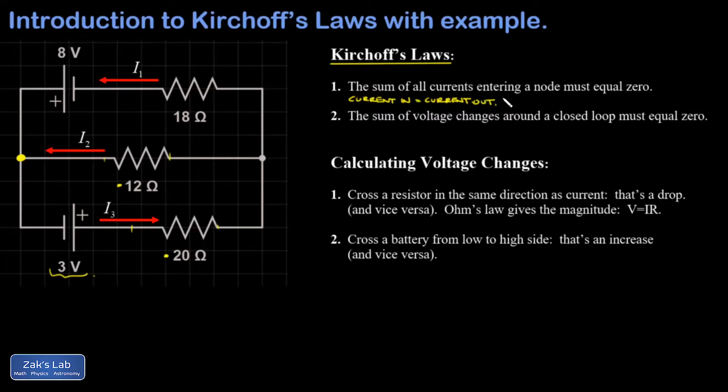Kirchhoff's Law number two, the sum of all the voltage changes around a closed loop must equal zero. All we're saying here is like if you drove your car in a giant loop and came back to where you started, then the sum of all the elevation changes must be zero.